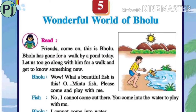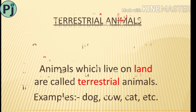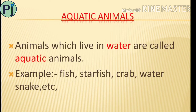We learned about the diversity in animals. Now, terrestrial animals — animals which live on land — are called terrestrial animals. For example, dog, cow, cat, etc. Then aquatic animals — animals which live in water — are called aquatic animals. For example, fish, starfish, crab, water snake, etc.